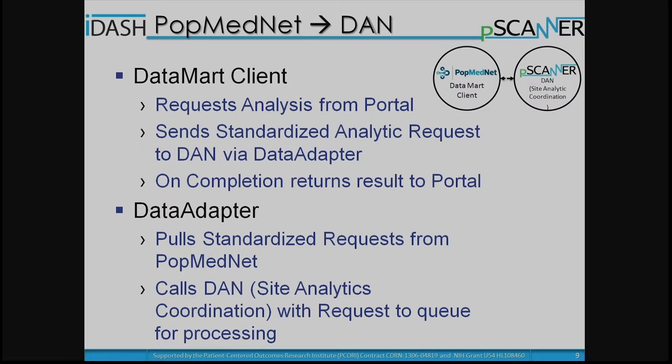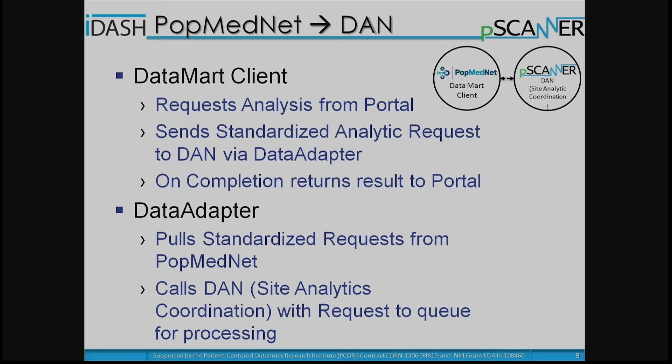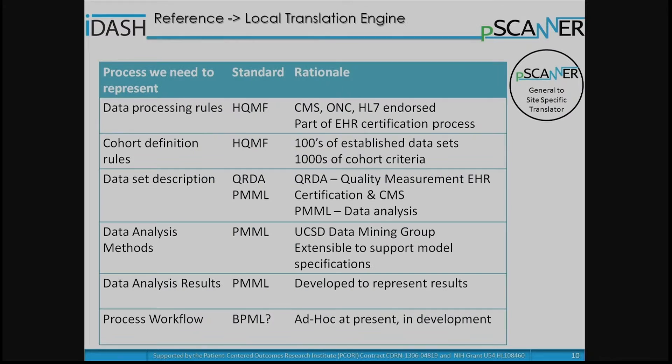A result request comes from the portal, builds up the request in standardized vocabularies and representations, goes through the data mark client and data mark adapter to the individual sites. A translation request is generated asking what analysis engine the site has — SAS, R, or Apache Spark. The analytic request gets translated and executed in the local environment, and results come back through the site-specific implementation, through the data mark client, back to the portal, and potentially aggregated into the PCORnet coordinating node for synthesis and review.